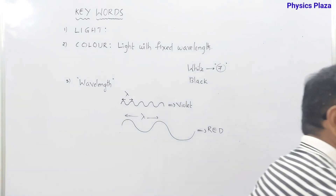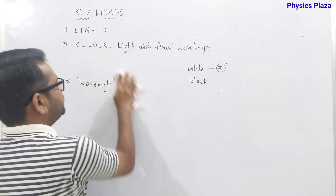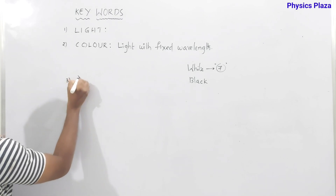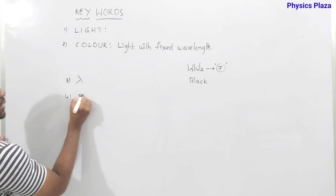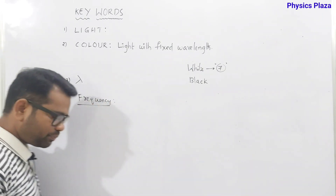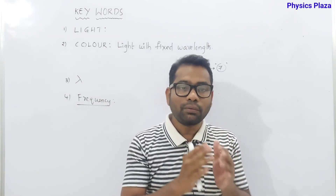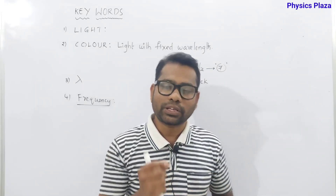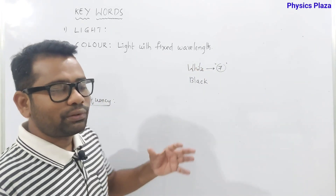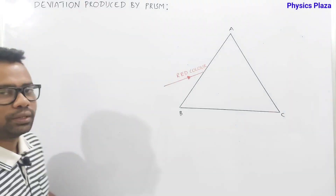The fourth keyword is frequency. Frequency is the number of waves produced in a second. These keywords — wavelength, frequency — are very important to understand the further discussion.